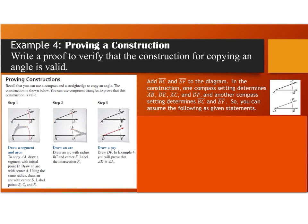After you have your construction of the two angles, angle A and angle D, add segment BC and segment EF to the diagram — these are the straight segments from your arc marks. In the construction, one compass setting determines segment AB, segment DE, segment AC, and segment DF.